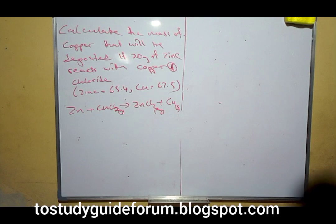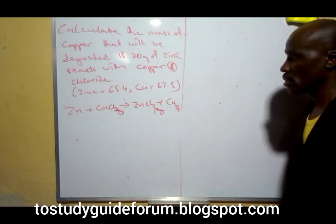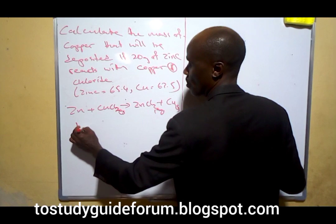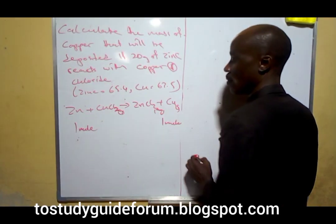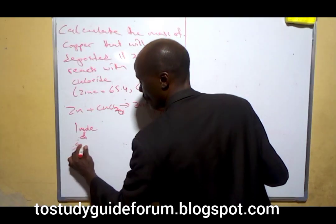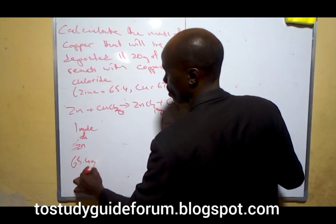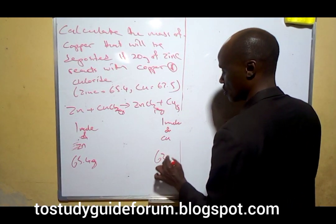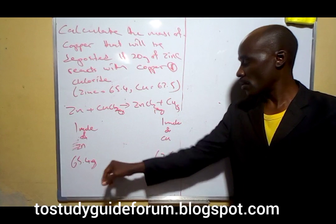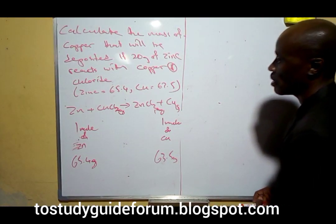The question says: calculate the mass of copper that will be deposited if 20 grams of zinc react with copper chloride. From the balanced chemical equation, we can see that one mole of zinc will give us one mole of copper, and a corresponding mass of zinc will give us a mass of copper. So this is a mass-to-mass conversion.